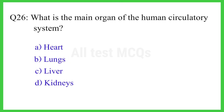Q26. What is the main organ of the human circulatory system? The right answer is option A. Heart.